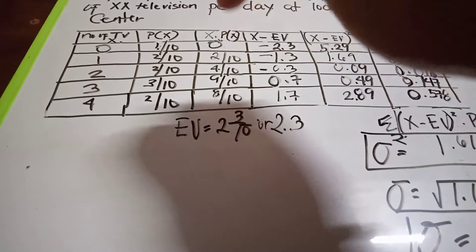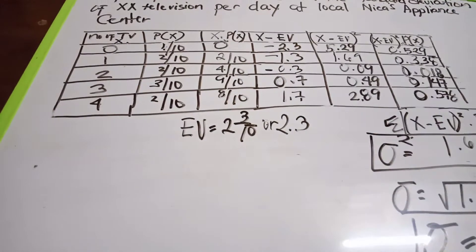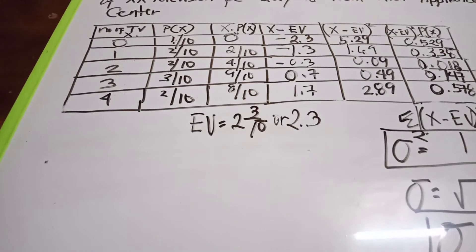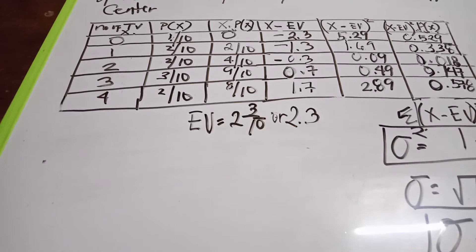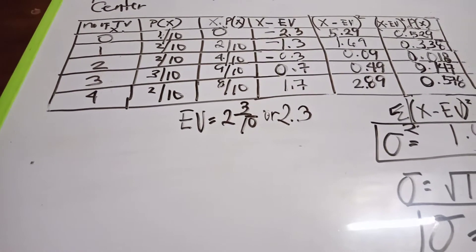Four times two over ten equals eight over ten. The total is twenty-three over ten, which we convert to 2.3 as a decimal. This is our expected value.